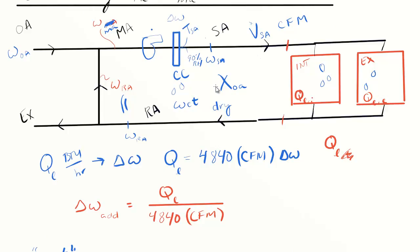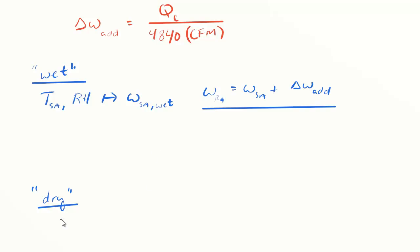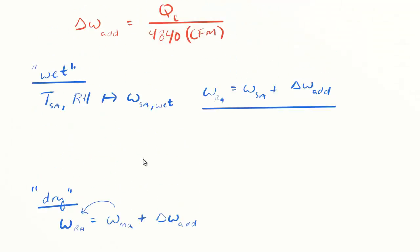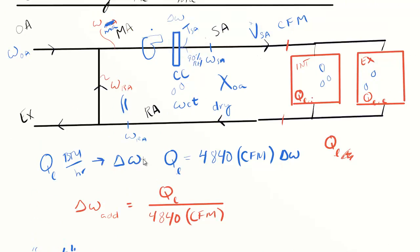That's our first assumption. Now we can do a similar thing. We're going to solve for omega_RA. In this case, omega_RA equals mixed air plus delta omega added. Here's where the confusing part lies - we don't have a specified value. In the wet case, we knew the supply humidity ratio, but here, the mixed air humidity ratio depends on the return air value. We can't directly solve for this.